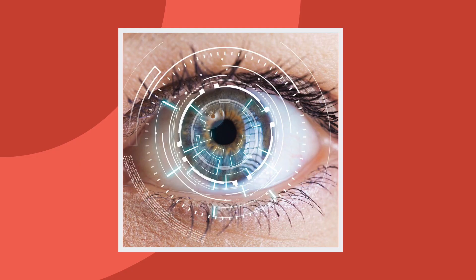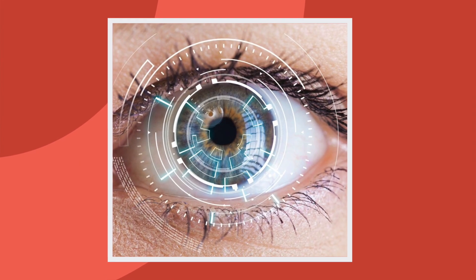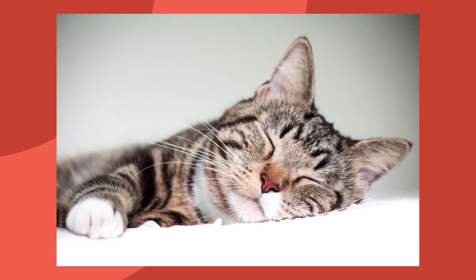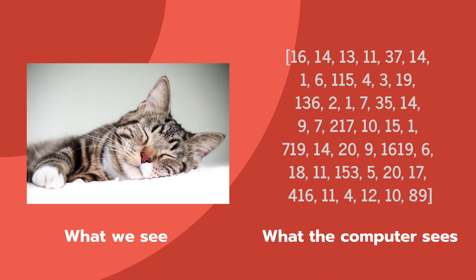Before we get into it, let's understand what computer vision actually is. Computer vision is a part of computer science which is focused on enabling computers to basically see and process images just like we do. So when we see a picture of a cute cat, we know it's a picture of a cute cat, but this task is extremely hard for a computer because while we see a picture of a cat, a computer actually just sees an array of integers.